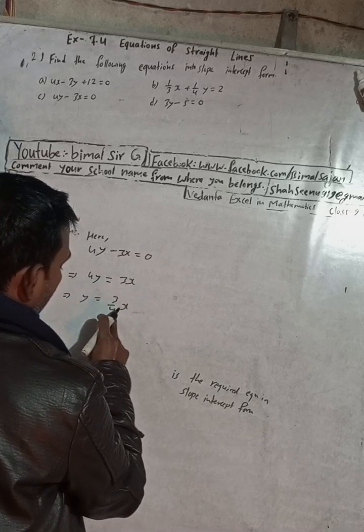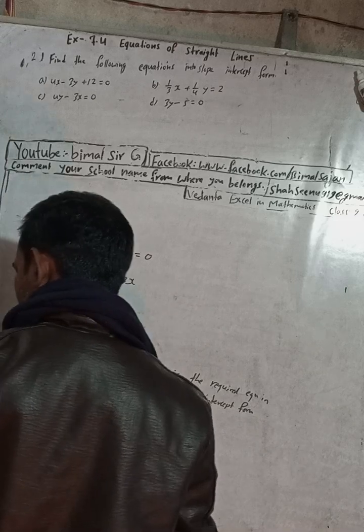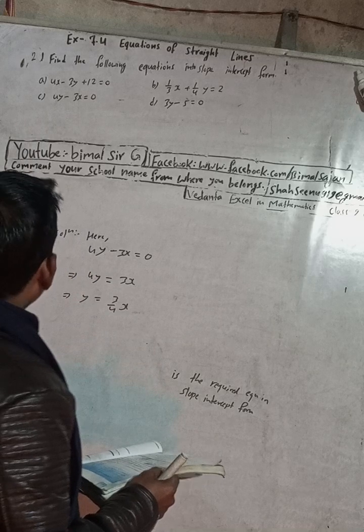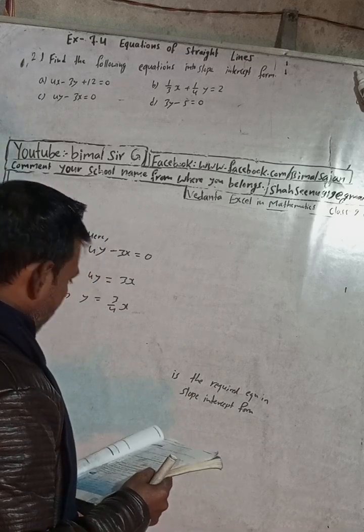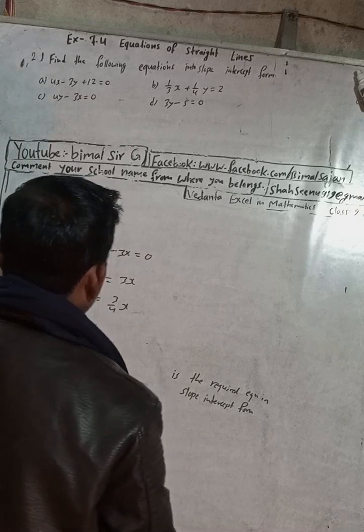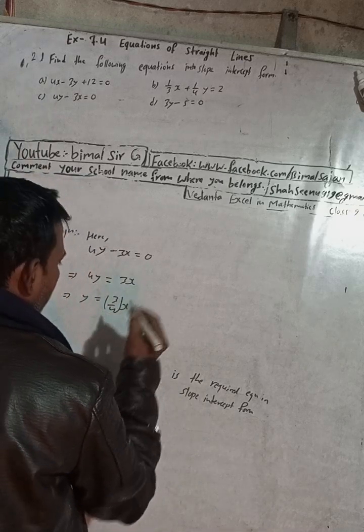y = mx + c. Here m is 3/4, and c = 0. In the book, answer c is y = 3/4x. They have used brackets, no problem, you can use brackets or simply write it. This is the required equation in slope-intercept form.